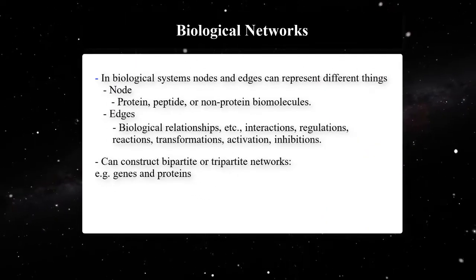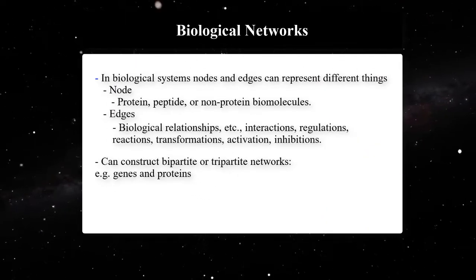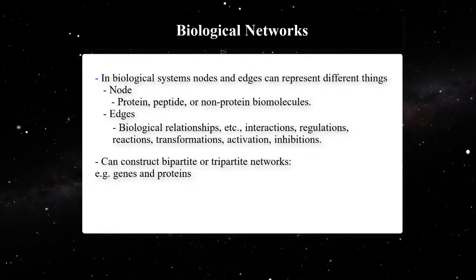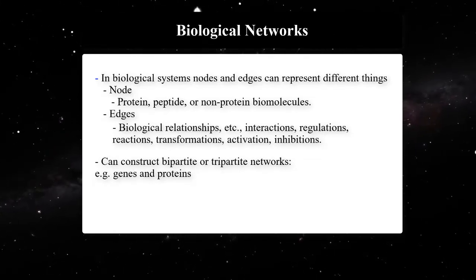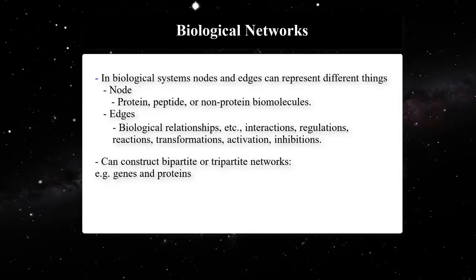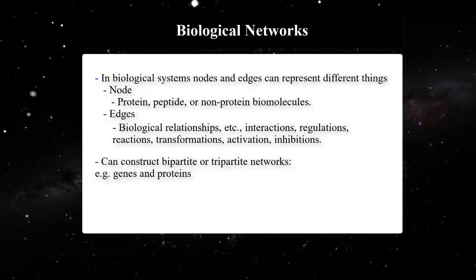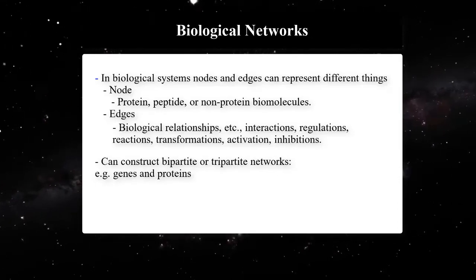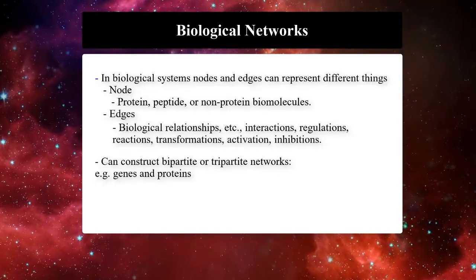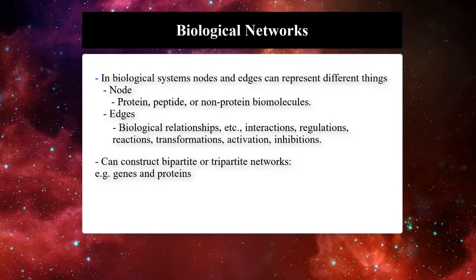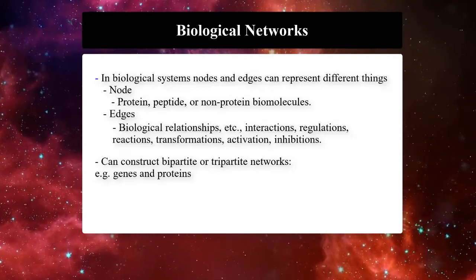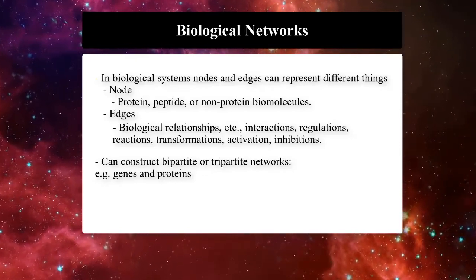In biological networks, nodes and edges can represent different things. Nodes can be proteins, peptides, or non-protein biomolecules. Edges can be any biological relationship such as interaction, regulation, or transformation.